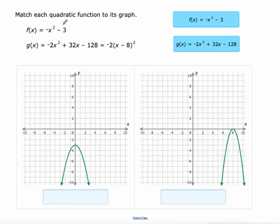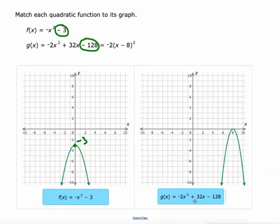I might point to the y-intercept right here of negative 3, as opposed to a y-intercept of negative 128 which is going to show up way down there. So that's enough to let us differentiate between these two. This one is the negative x squared minus 3 and this one's the negative 2x squared plus 32x minus 128. So y-intercepts, huge thing too.